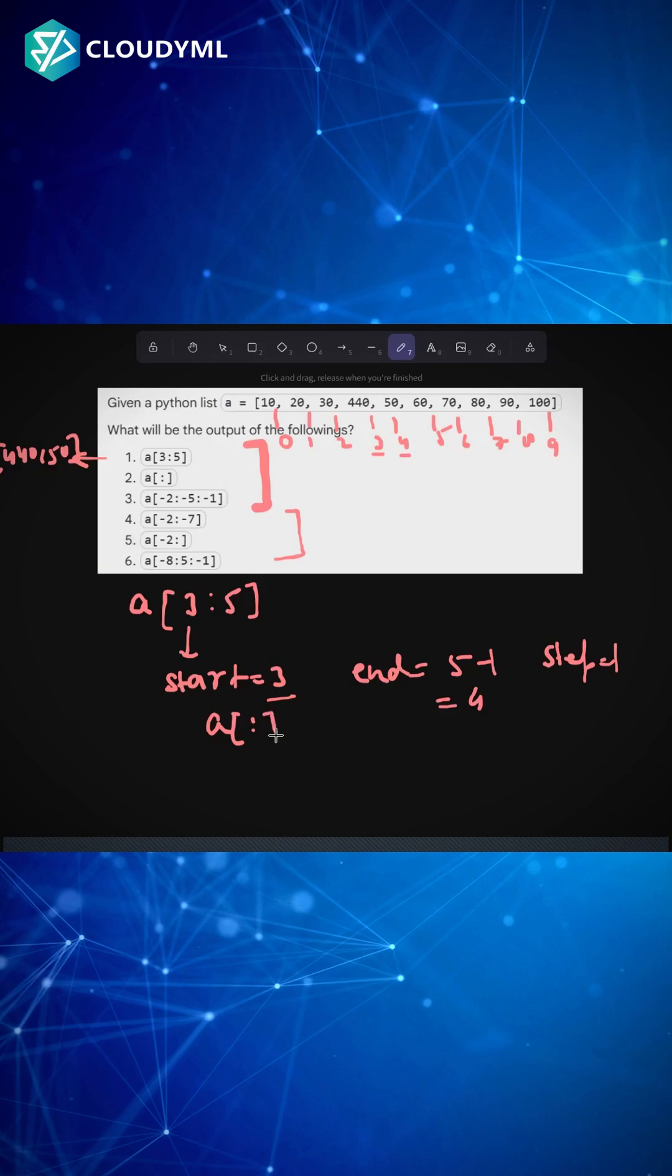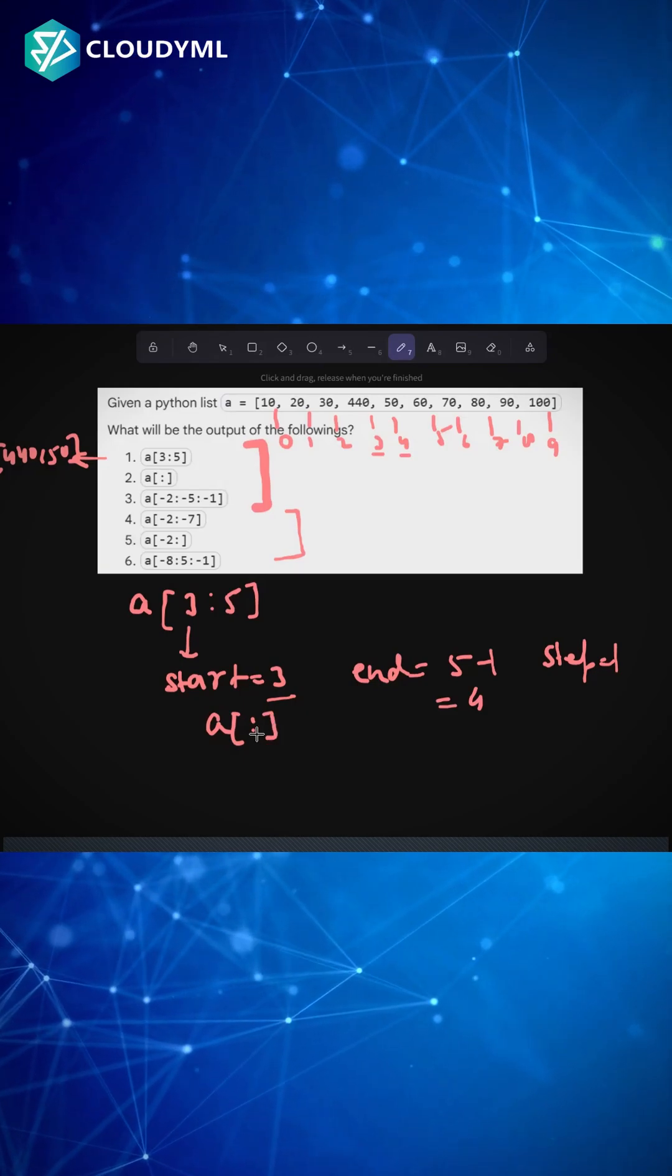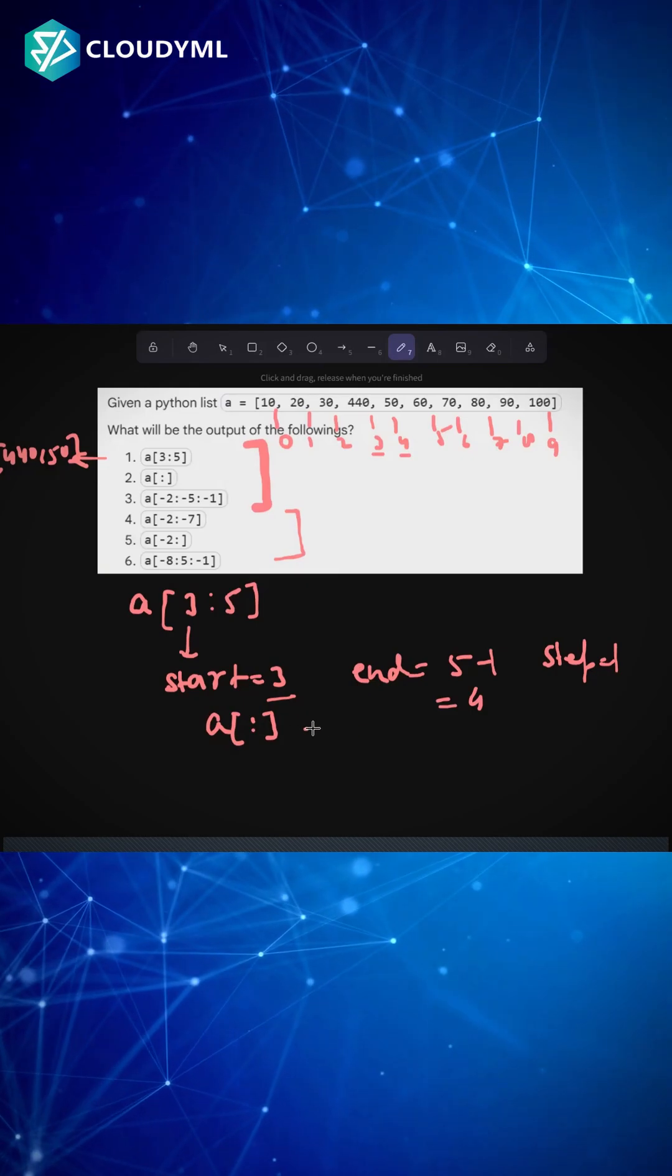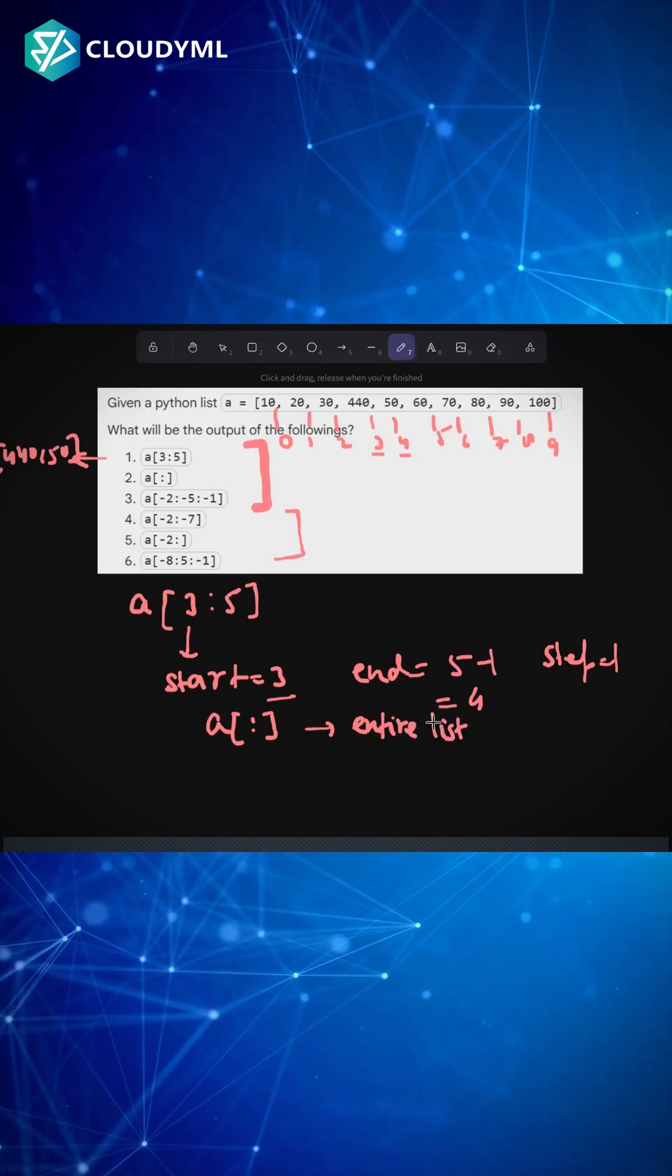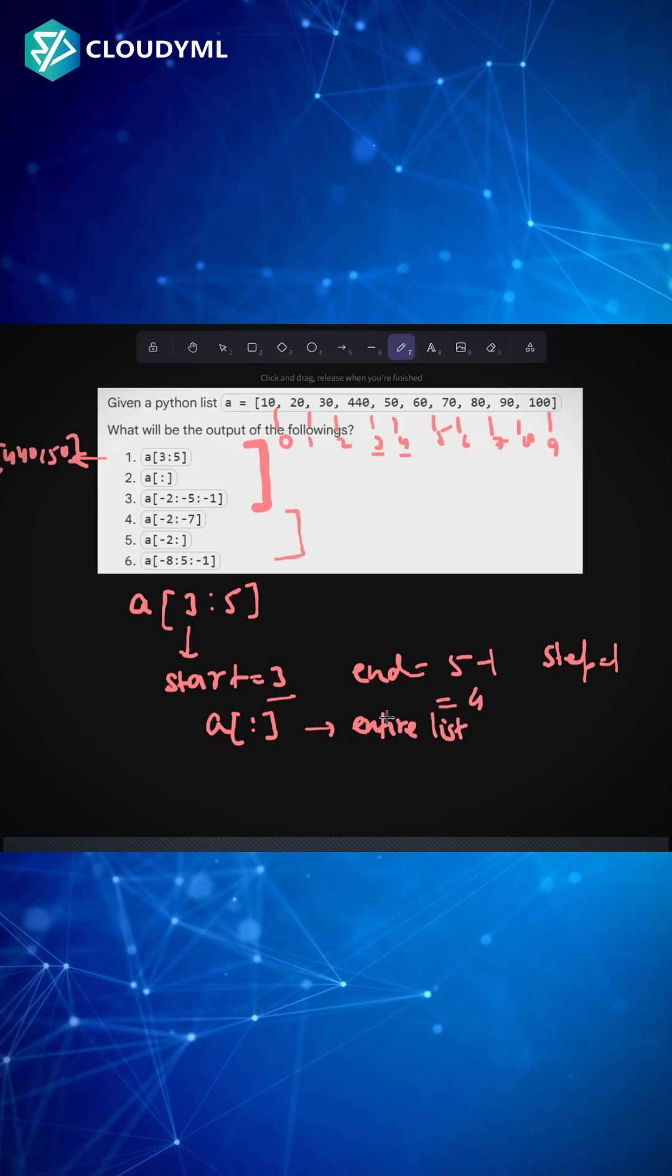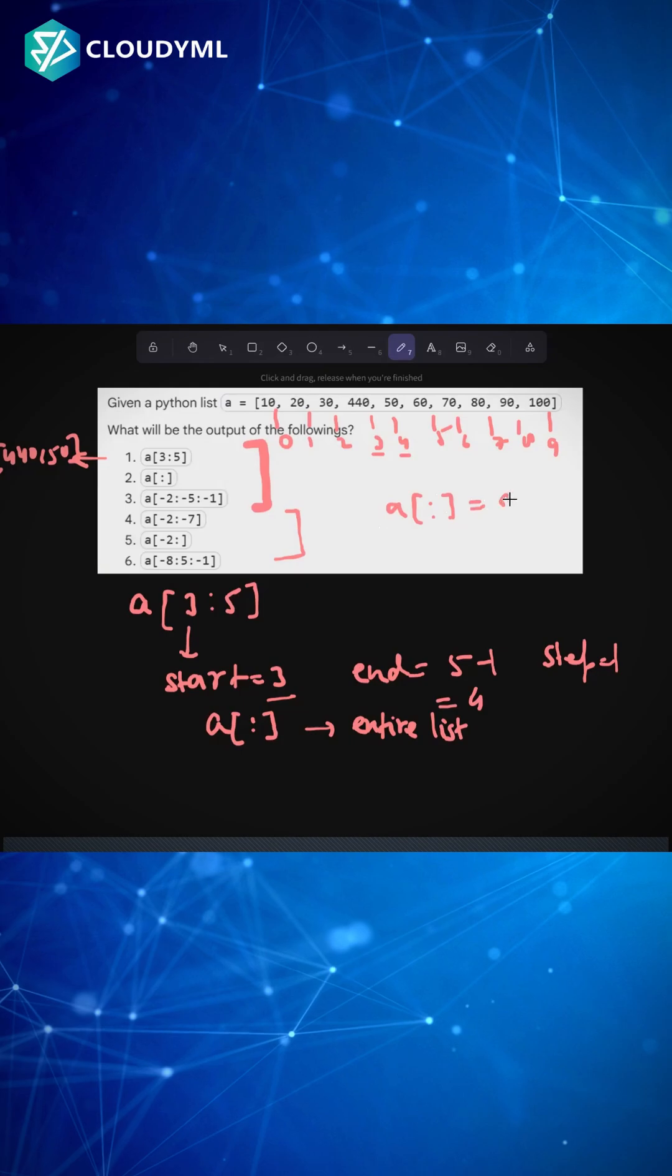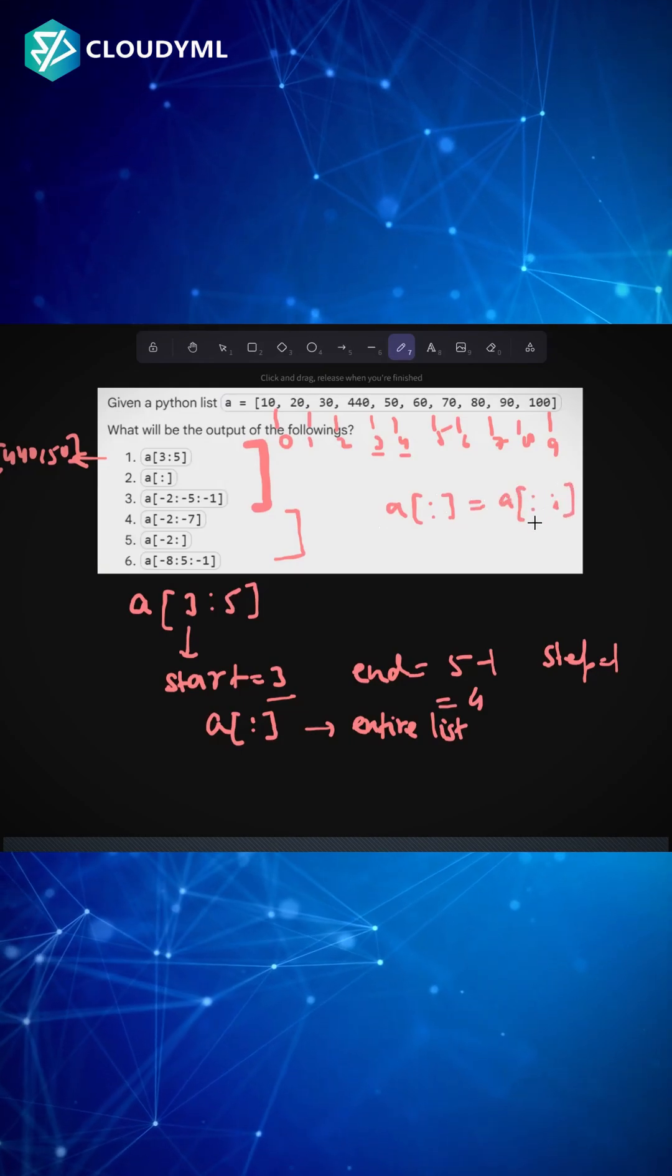This is a very classical question which confuses most people, and the answer is that it will give me the entire list. If you write a[:] or a[::], both of these things are equal and the same.